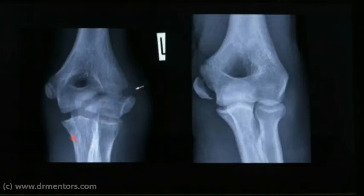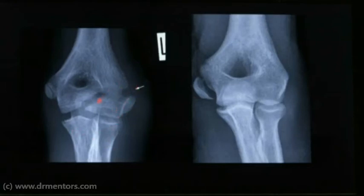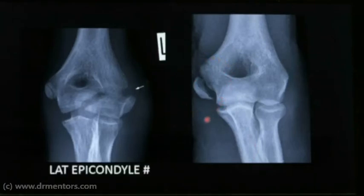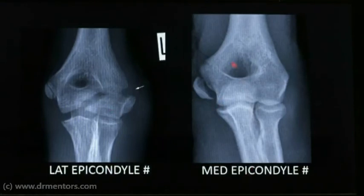To identify whether a fracture involves the lateral or medial epicondyle, first look at the bones of the forearm. Identify the radial head and olecranon to distinguish radius from ulna. If the fracture is on the side of the radius, it is a lateral epicondyle fracture. If it is on the medial side near the ulna, it is a medial epicondyle fracture of the humerus.